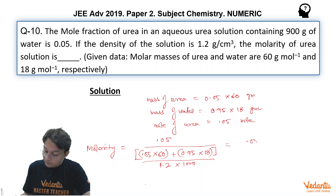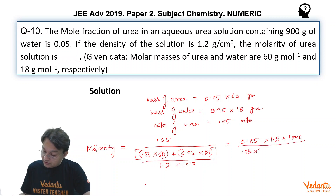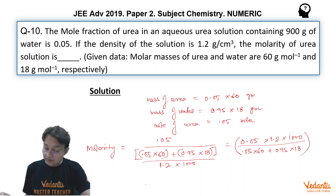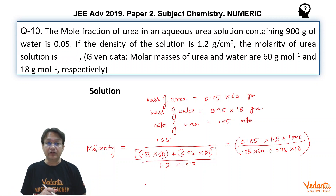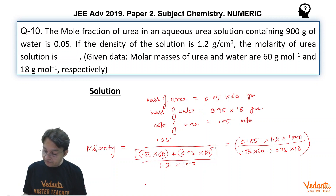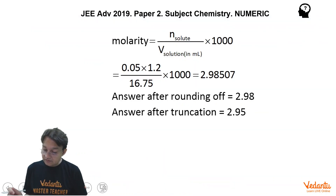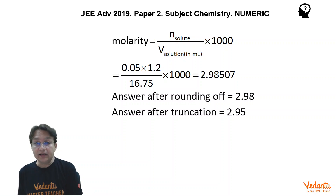So it comes out to be 0.05 × 1.2 × 1000 divided by (0.05 × 60 + 0.95 × 18). And when we solve it, we will get the molarity. That is one way of solving the problem, simply going by the basic definition. And if we solve it, we get the answer which is equal to 2.98507.